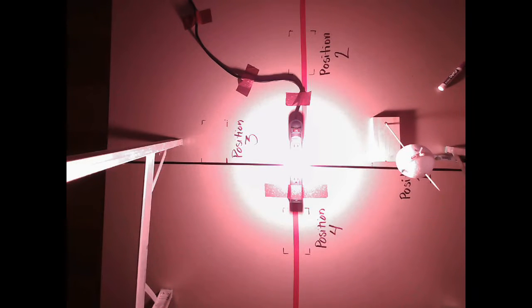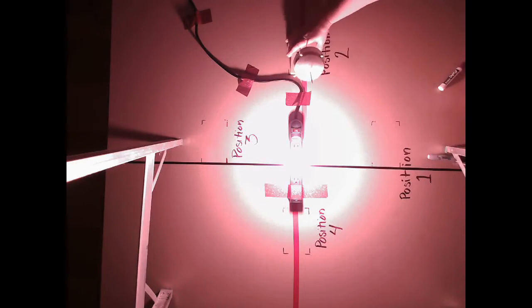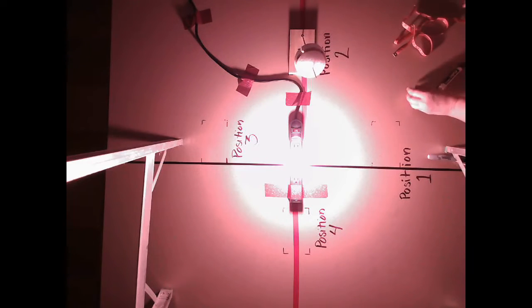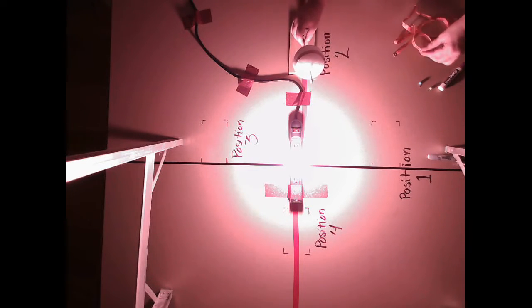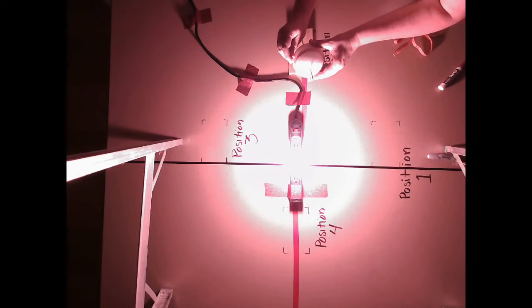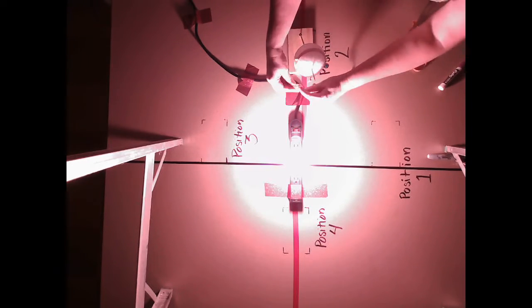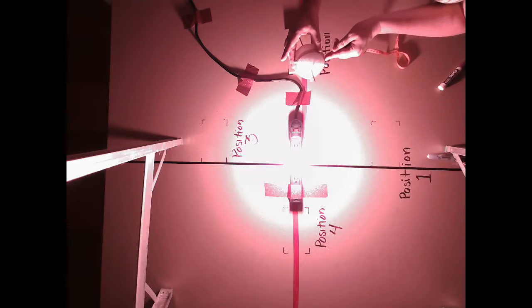So we are going to move it to position two. We are going to take these push pins out because we are going to change our day length. We are going to turn our little guide towards the Sun and put our push pins in where the light meets the dark. And we are going to measure again. We are at 16 and a half centimeters.